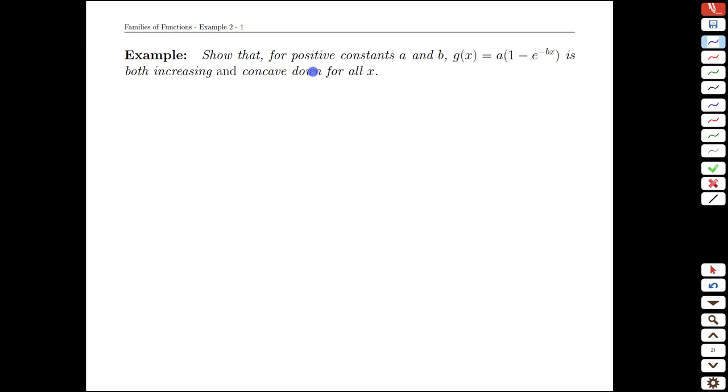What we'd like to do here, what we're asked to show first, is that assuming that a and b are positive, that gives us some parameters to work with, that this function is both increasing and concave down for all x. Of course, to show things are increasing, that's going to be the first derivative information, and we're going to show that that's positive all the time, and to show that it's concave down, we'll need to show that the second derivative is negative.